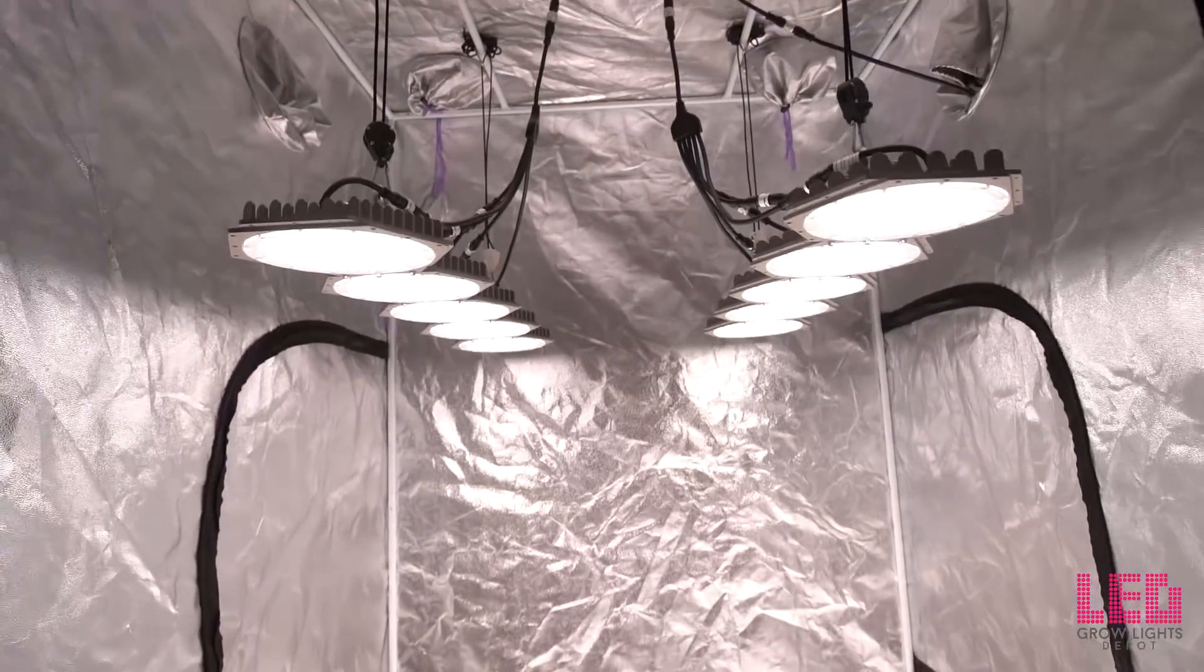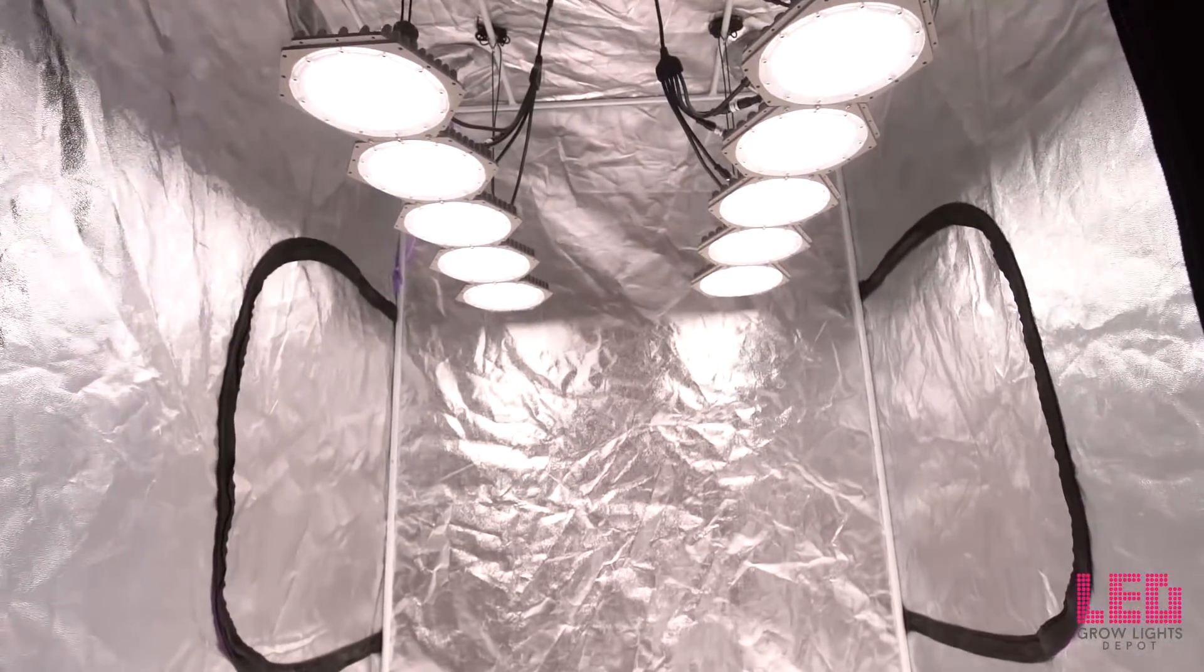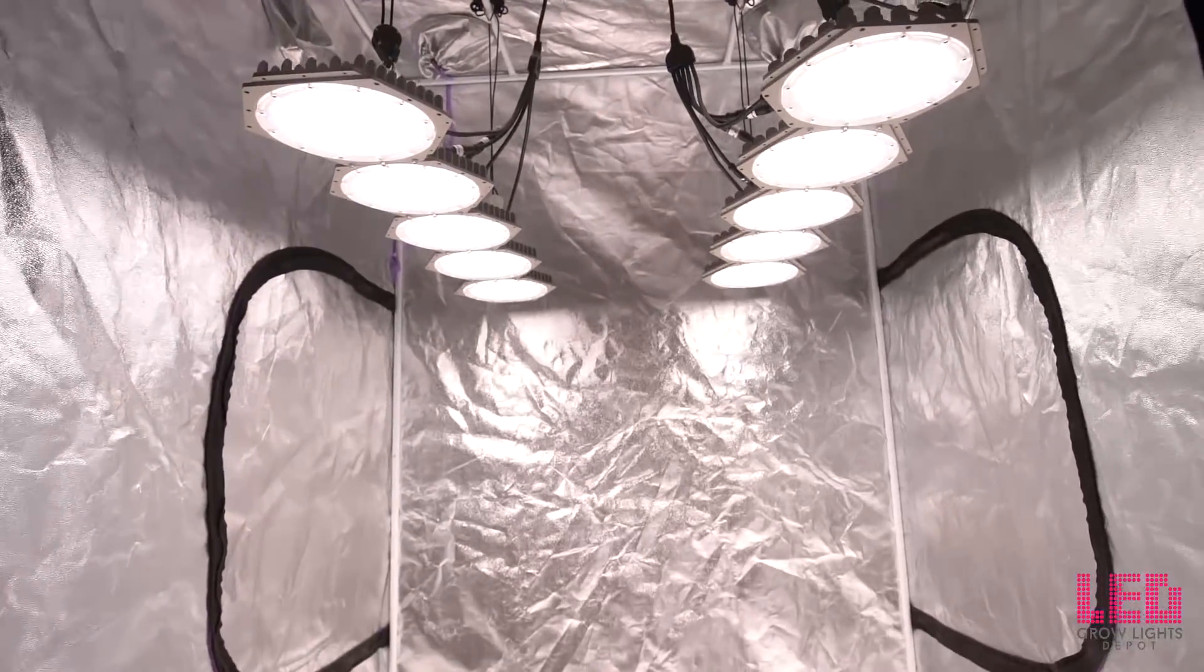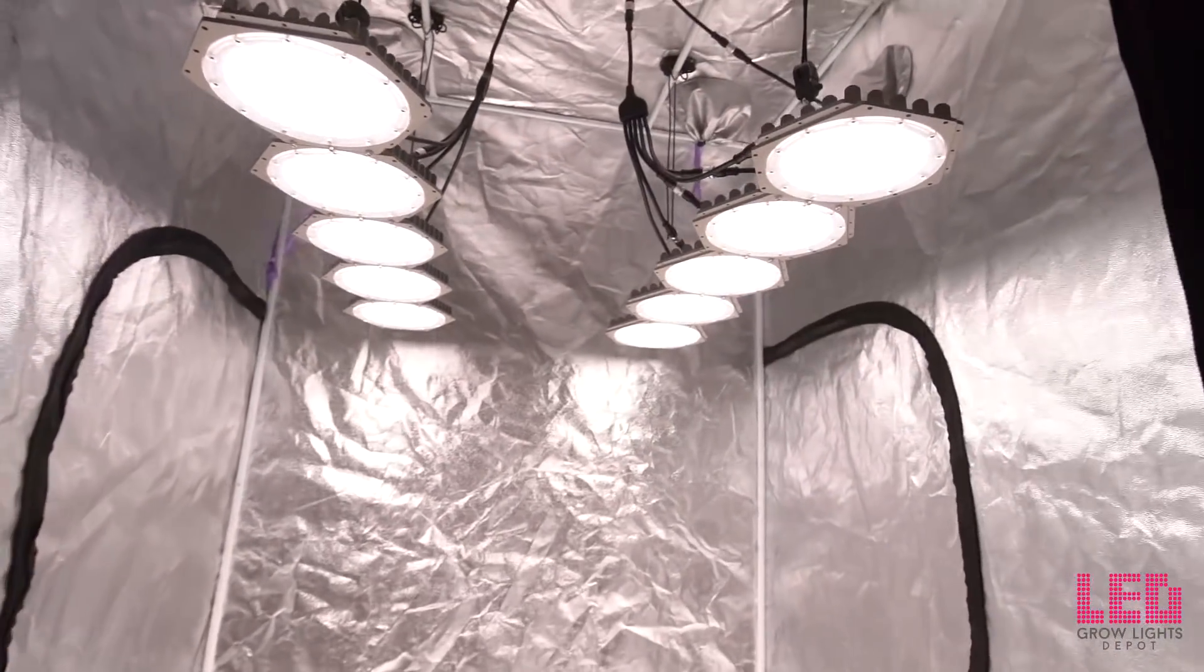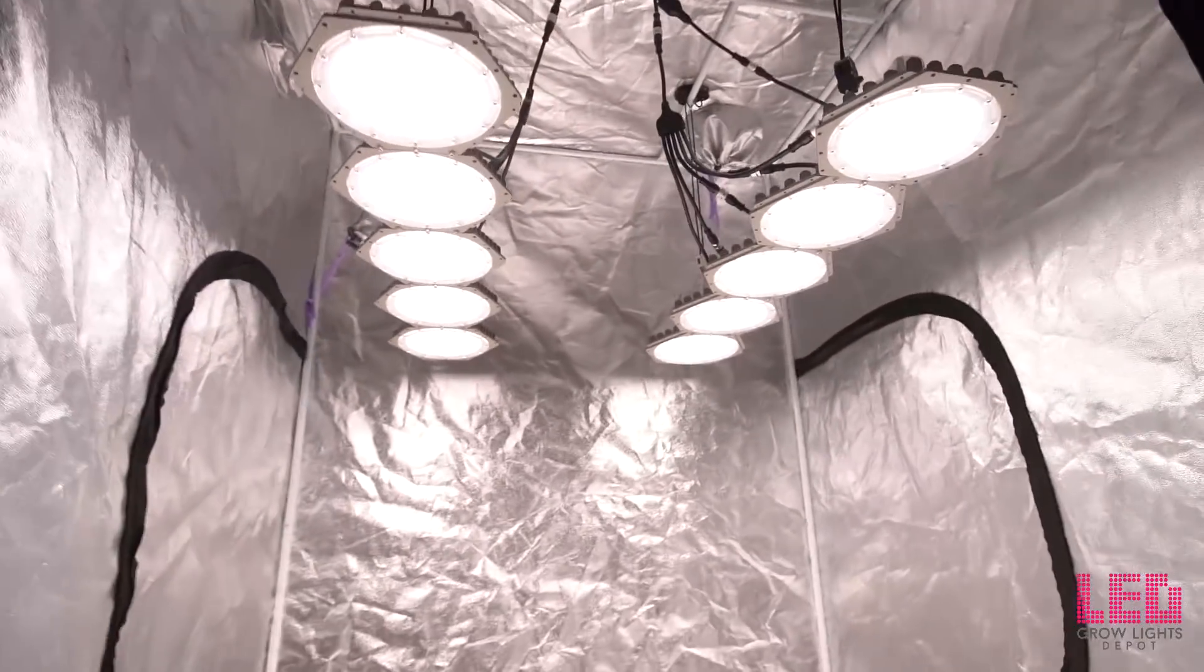The N-Light Sun Disc LED grow light is comprised of two separate panels. Each of the two units measures 40 inches by 8 inches by 2.75 inches. The entire fixture weighs 30.2 pounds. Each panel contains five separate discs, each with its own integrated driver.